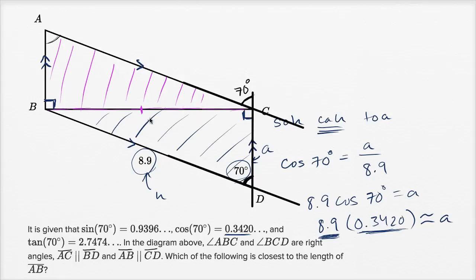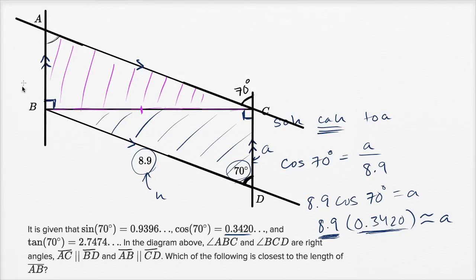Now if that angle is 70 degrees, let's make AC into a transversal. Extending these lines so we see how they intersect — AC is a transversal for line AB and line CD. We know alternate interior angles are congruent, and this one is an alternate interior angle with this one right over here. So if this is 70 degrees, then this too must be 70 degrees.